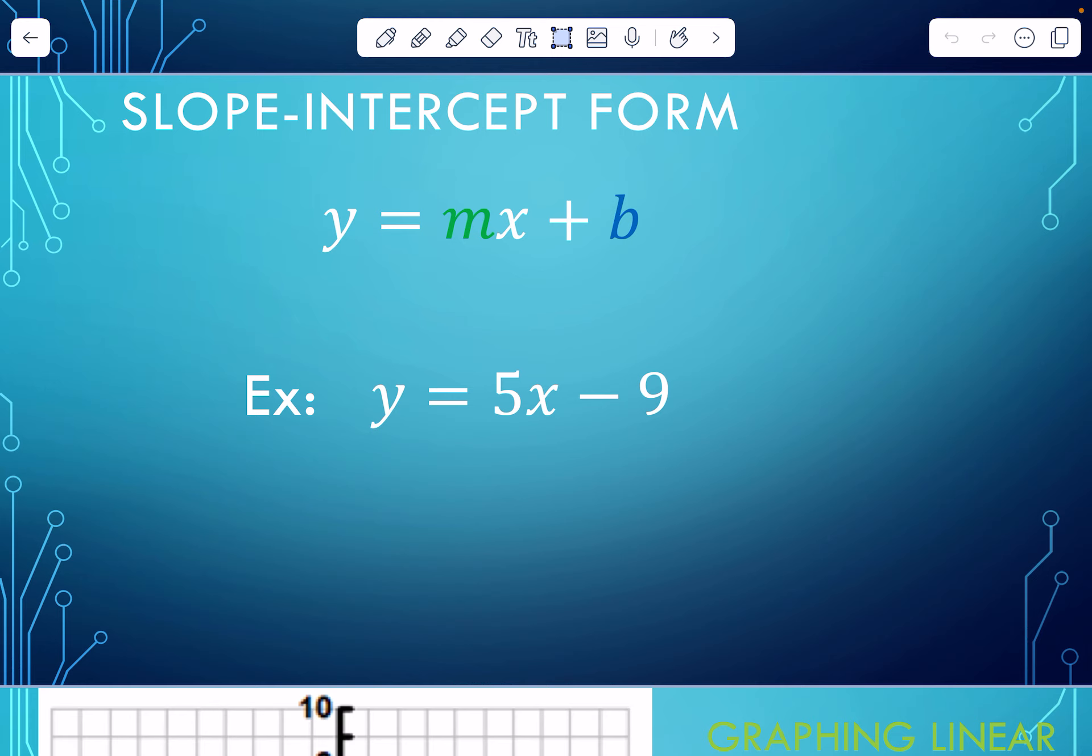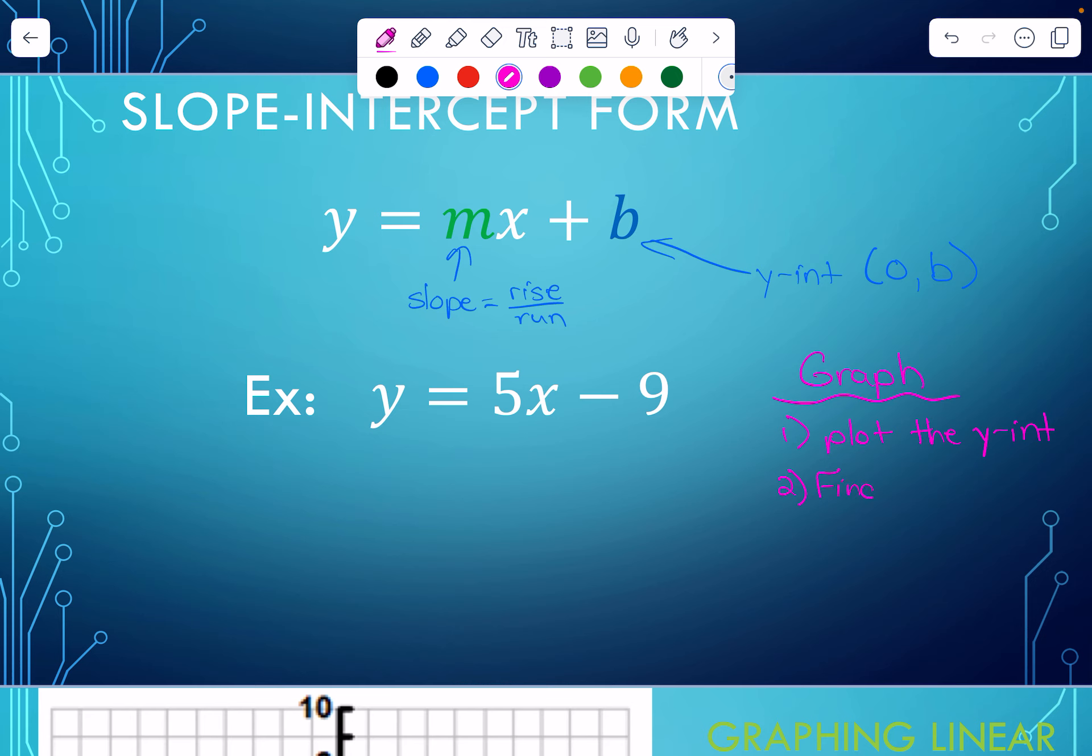Remember y equals mx plus b, and we know that the m is the slope, and the slope is referred to as rise over run. b is the y-intercept. It is the ordered pair 0 comma b, and it will be located on the y-axis. When we graph using this, the first thing is we need to plot the y-intercept, and then step two, find two additional points using the slope.